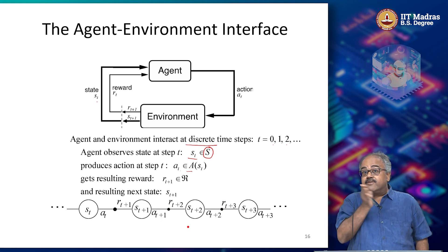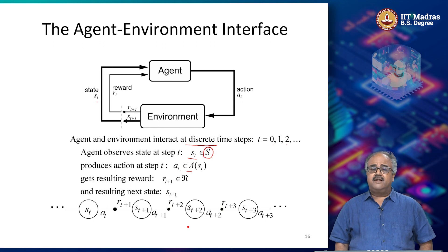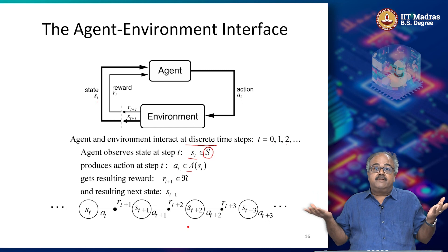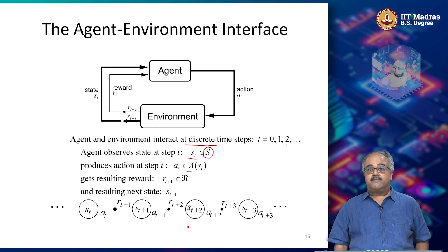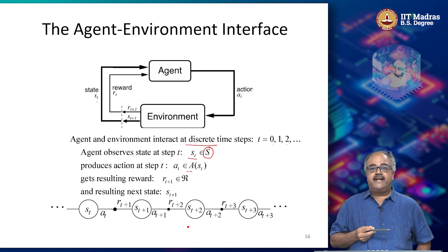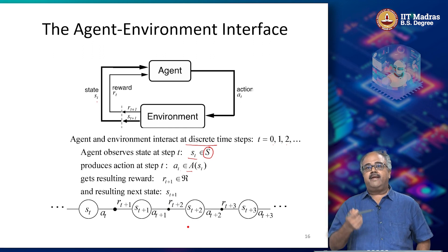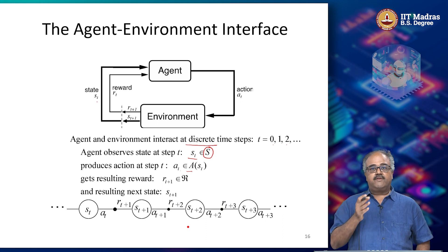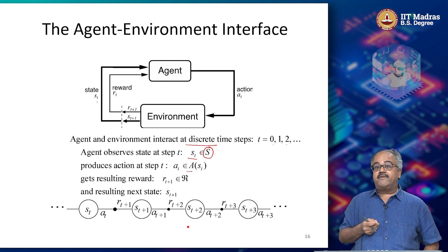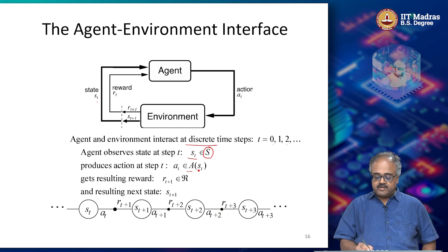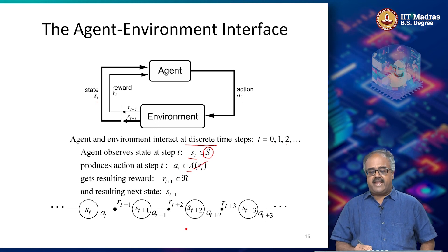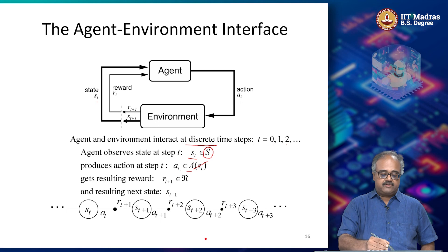The action A_t comes from some set which we call capital A, and this capital A could change from state to state. In tic-tac-toe, initially you have 9 possible moves, but the next time you come to the board, you have only 7 moves because one has been taken with an X and another by your opponent with an O. For every state you see, the number and type of moves available can vary, which is why we sometimes denote it by A(S_t), though quite often we just say A.